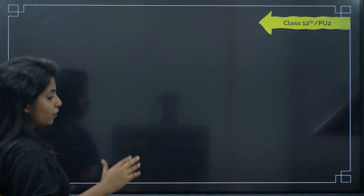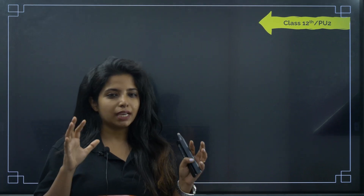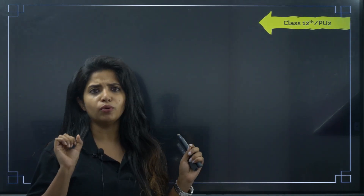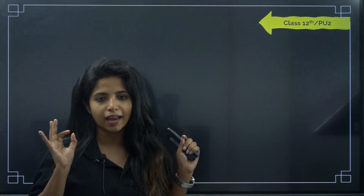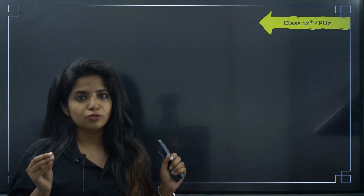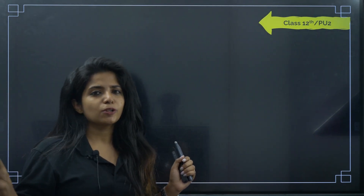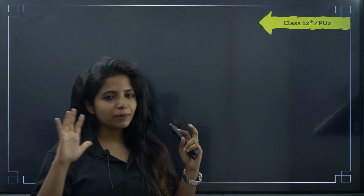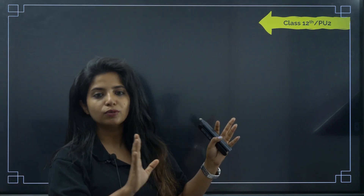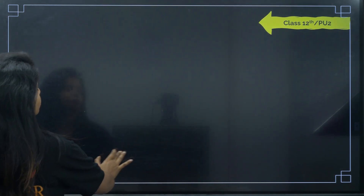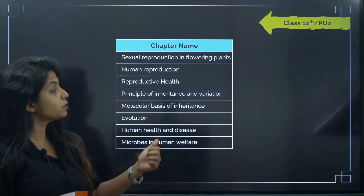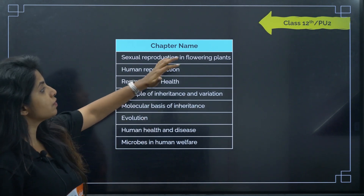First, I'll talk about the chapters in 12th standard. In Karnataka you call it PU2, and in other states as well — do not be confused, class 12th and PU2 are the same thing. In 12th, we start with sexual reproduction in flowering plants.